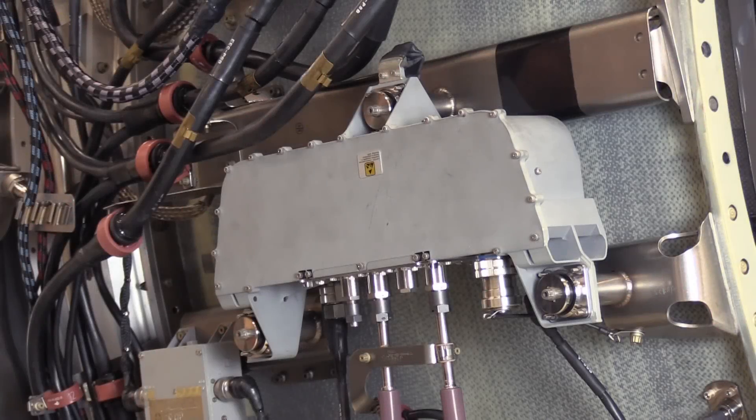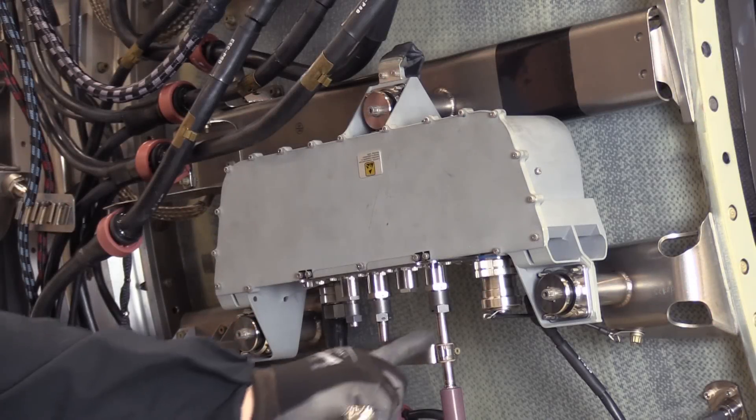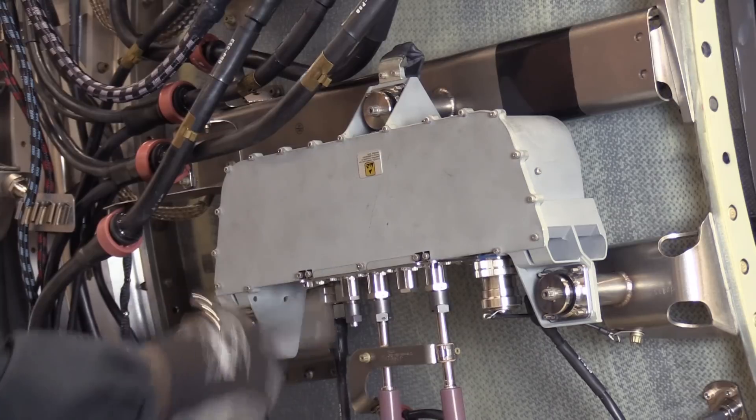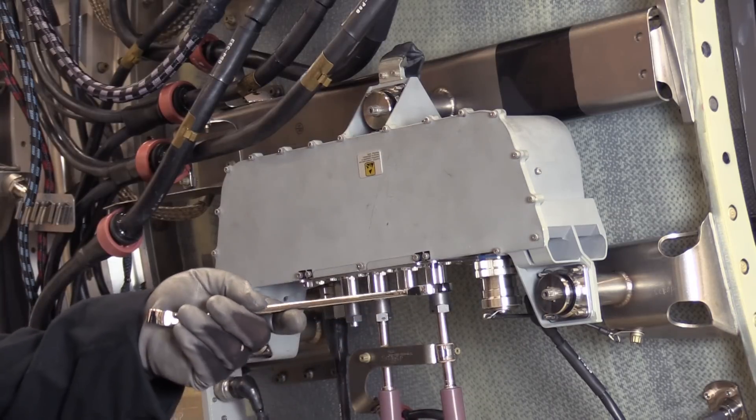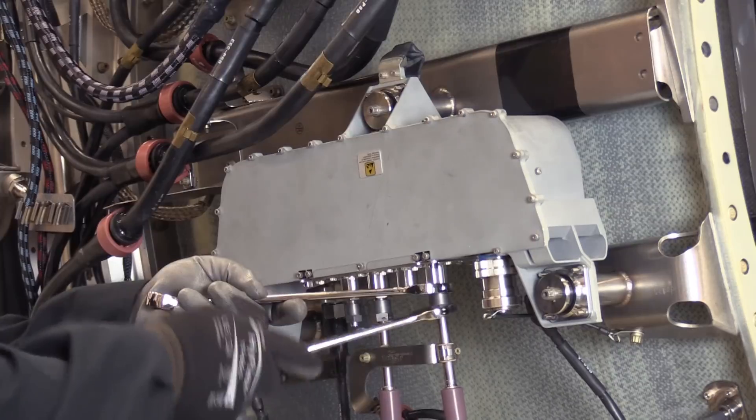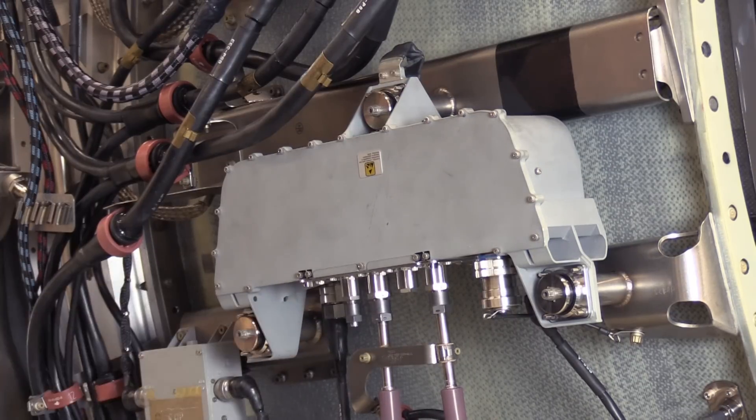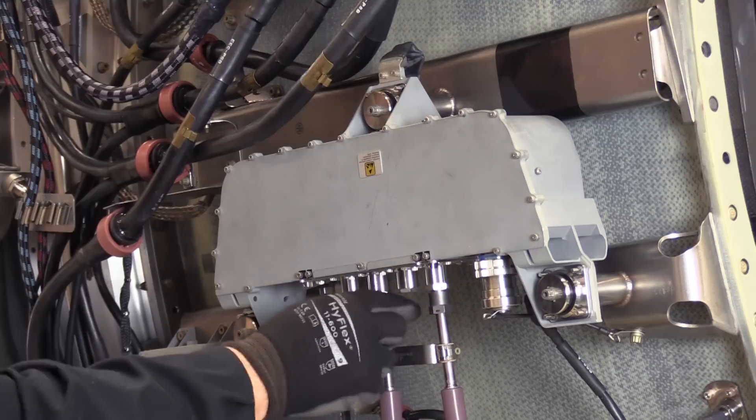So to get started with the procedure, the first thing we need to do is disconnect the PS3 line and the P3B line from the pressure subsystem box. I've already taken the liberty of cutting the safety wire, being sure to use a backup wrench on the fittings. We're going to go ahead and loosen those, and then we can remove the lines by hand.